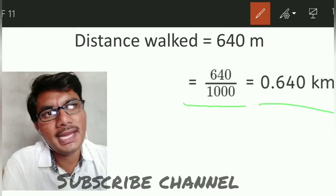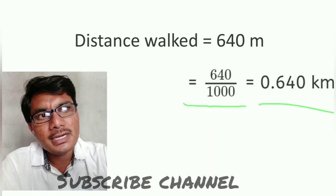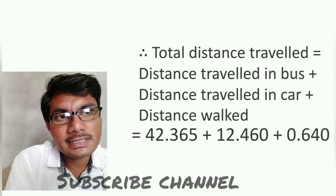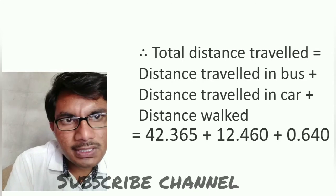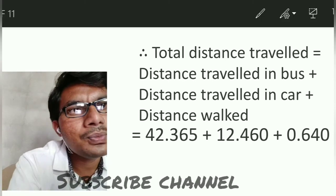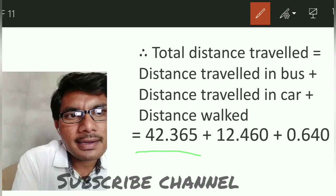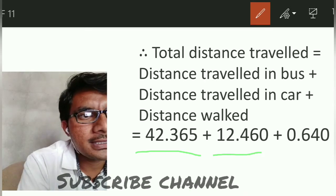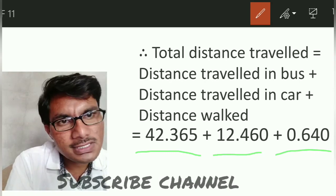For the final answer, we need to find total distance traveled altogether. Add all three quantities: distance traveled in bus plus distance traveled in car plus distance walked. Total distance is 42.365 plus 12.460 plus 0.640.